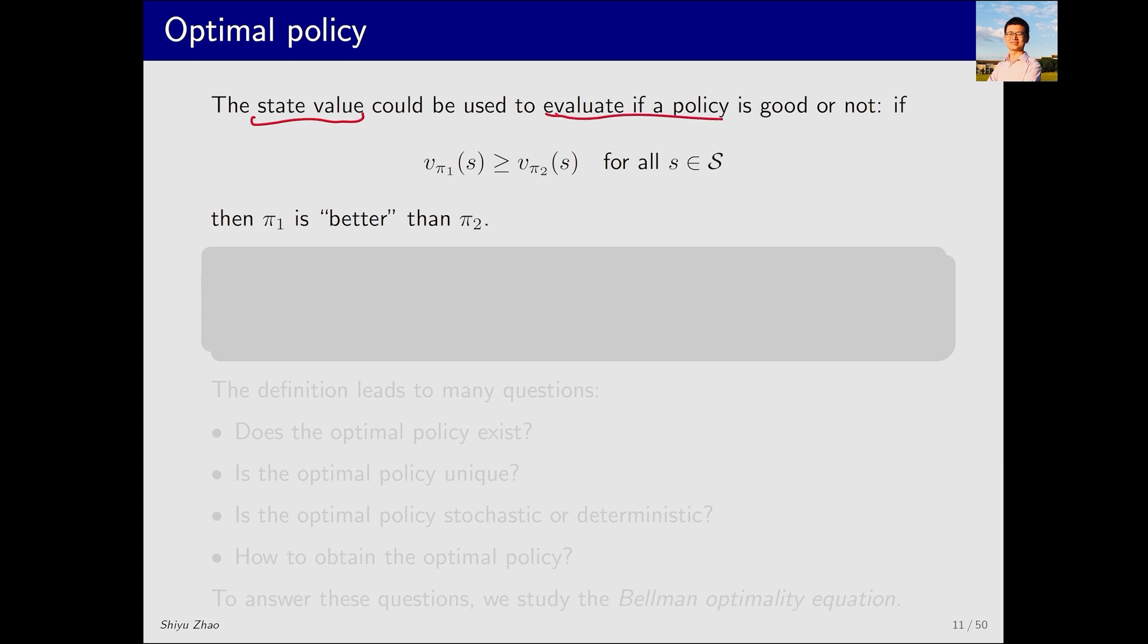Let's formalize this idea. Suppose we have two policies, π1 and π2, each with its own state values. If for every state s, the state value for π1 is greater than that for π2, then we say that π1 is better than π2.